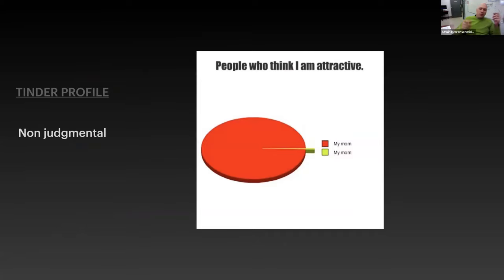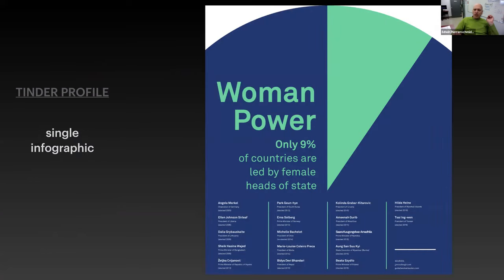The students in the classroom have that strip right in the middle, but basically it's a basic pie graph straight from Excel. Tinder profile — single infographic. There's only a 9% data entry right there, and you make a graphic out of that and you make a poster out of it.